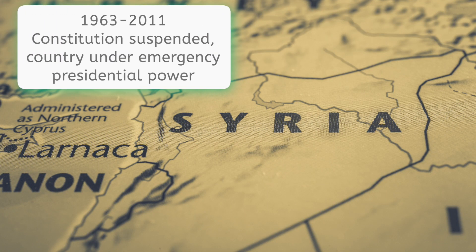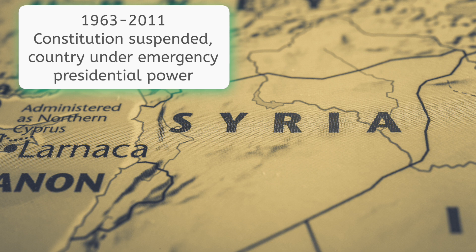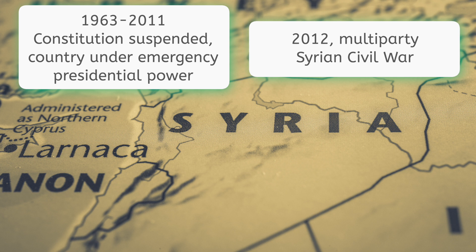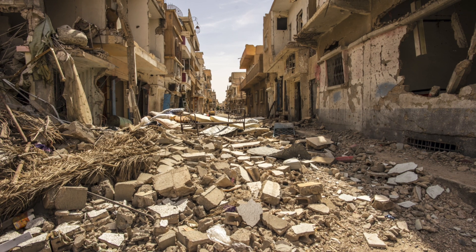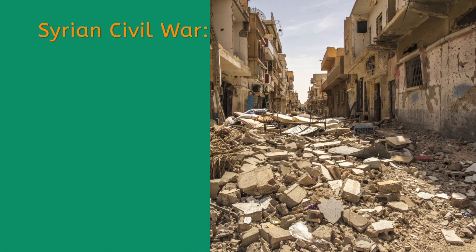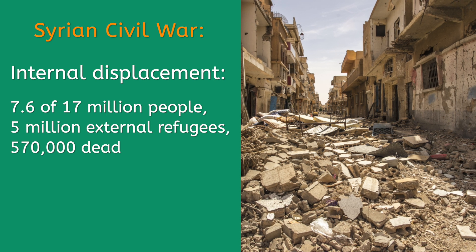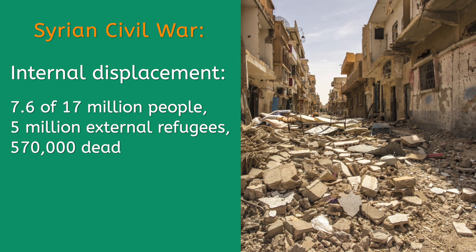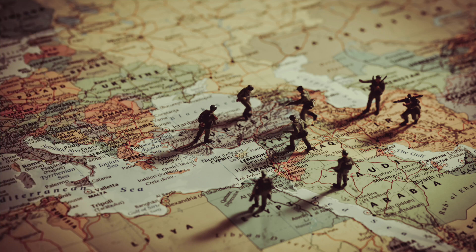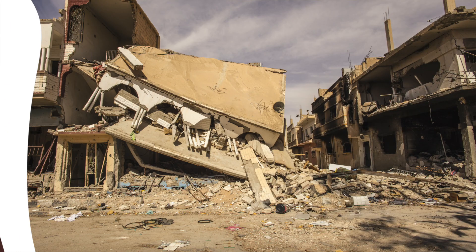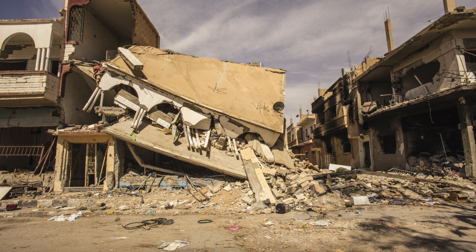From 1963 through to 2011, Syria operated under a suspended constitution with an emergency powers law, and the only reason that emergency law expired in 2011 was that a massive multi-party civil war erupted that year. The ongoing conflict has taken a huge toll on the Syrian people: 7.6 million have been displaced from their homes, 5 million have fled the country, and half a million are dead. There are no clear sides in the conflict, making it difficult to enlist help from other countries or to know who is fighting who. As of 2022, things seem to be improving, but Iran, Israel, and Russia are all working to ensure that the resolution works out in their favor.